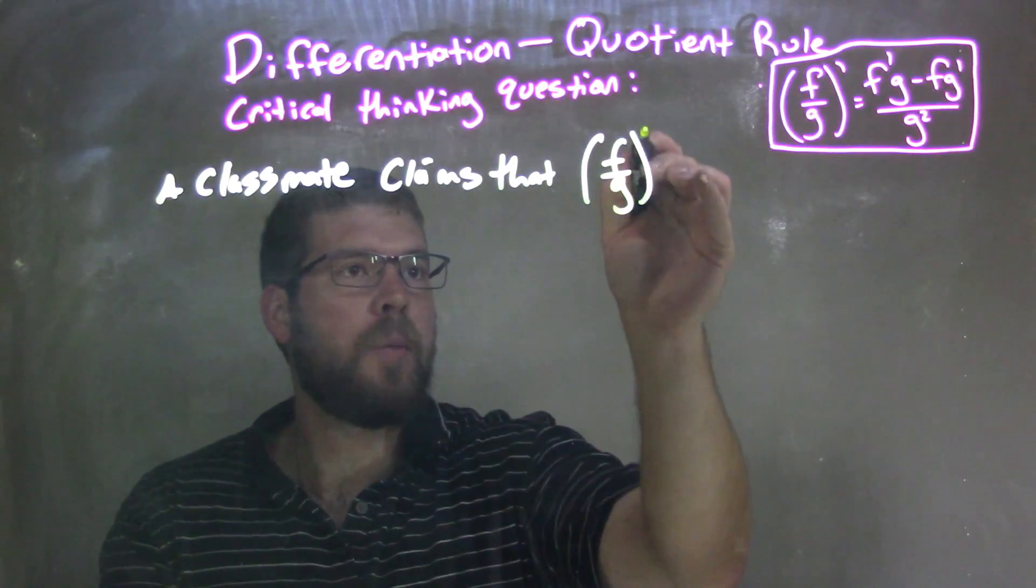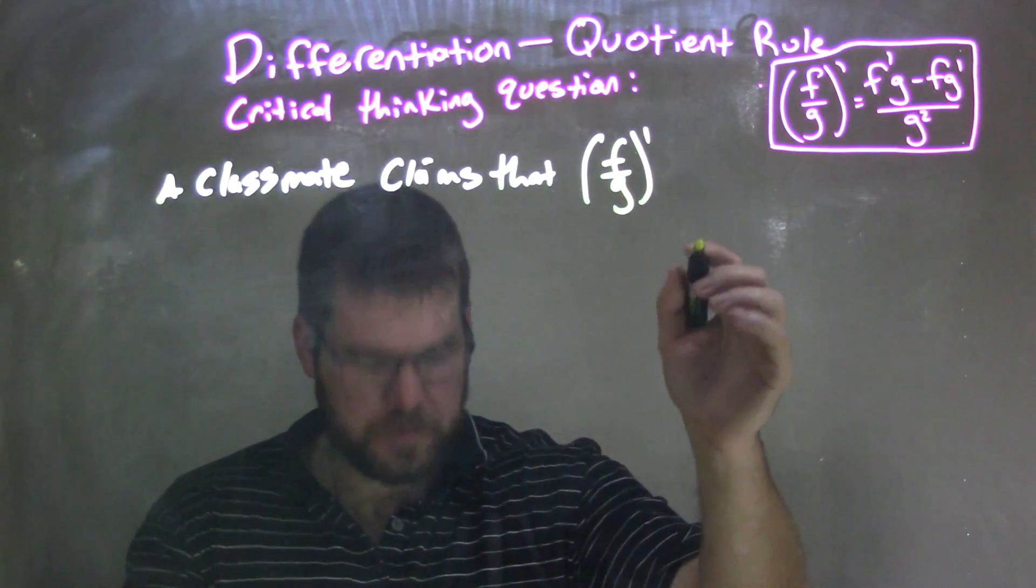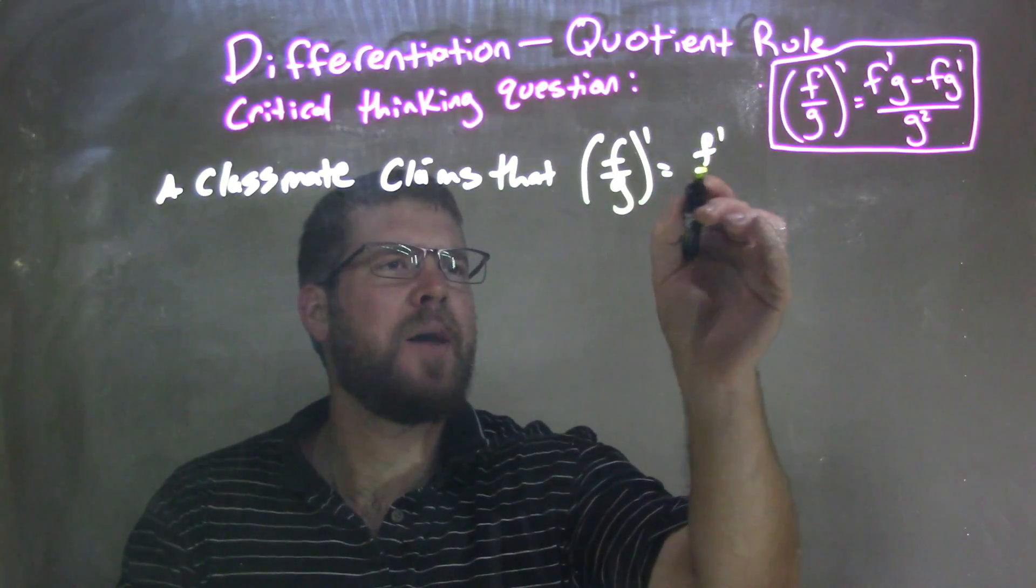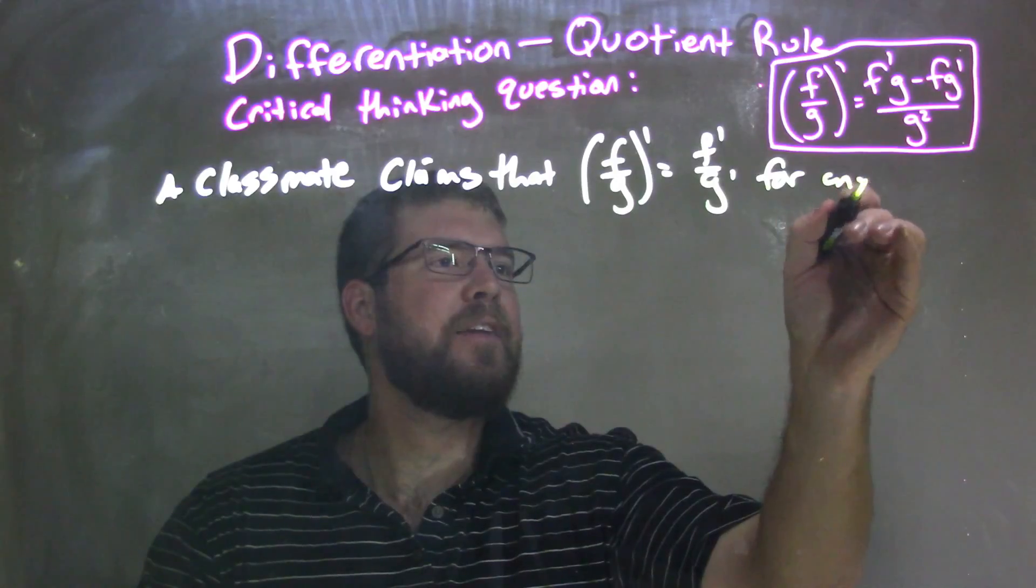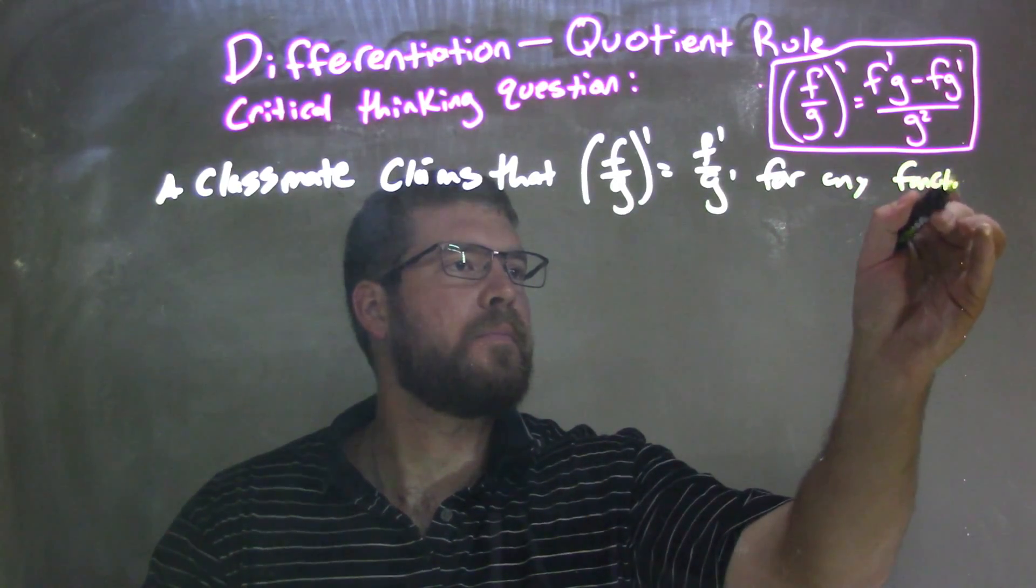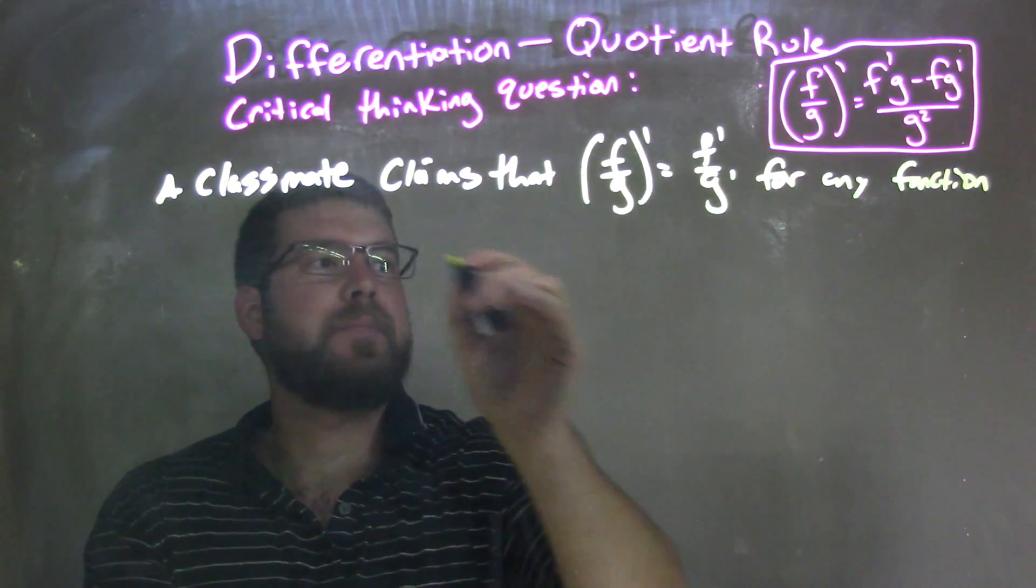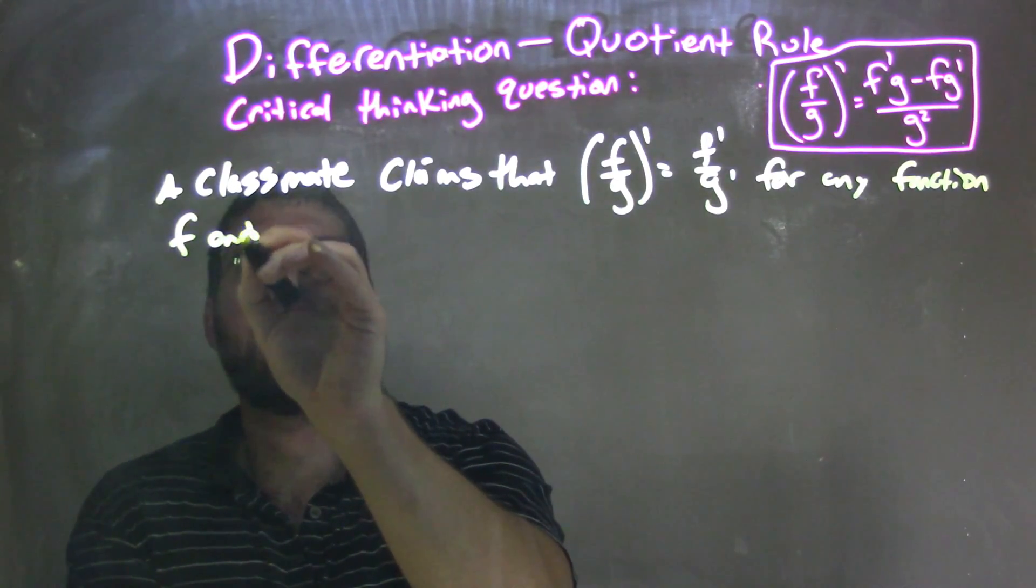that f over g all prime, right, the quotient rule, is equal to f prime over g prime for any function f and g. Over here, f and g.